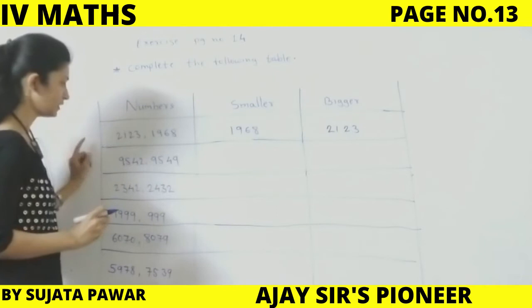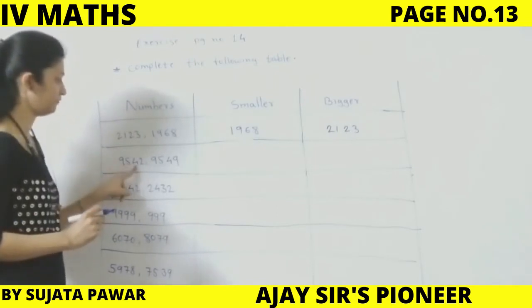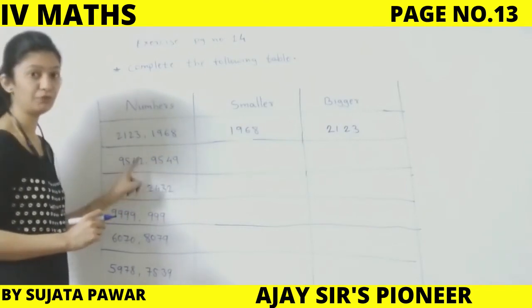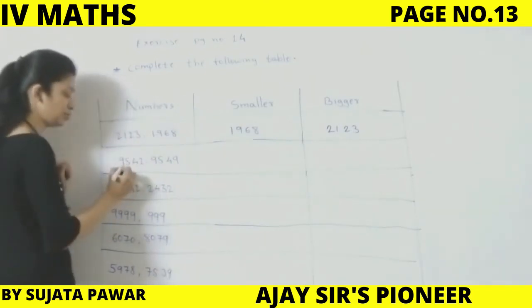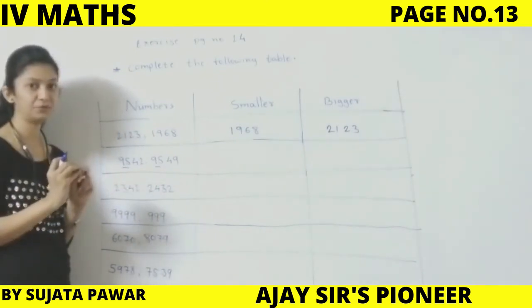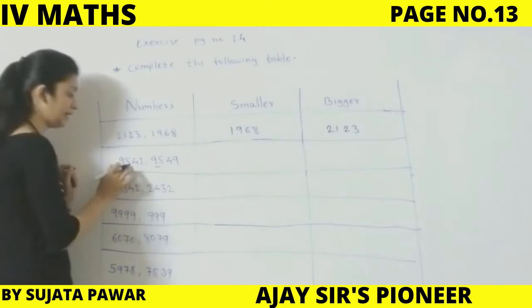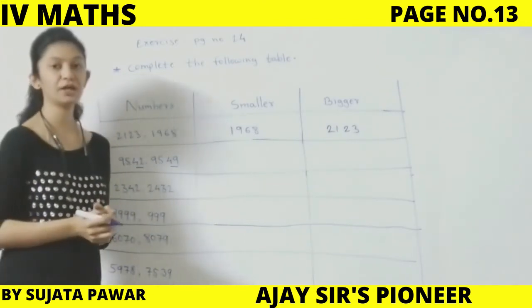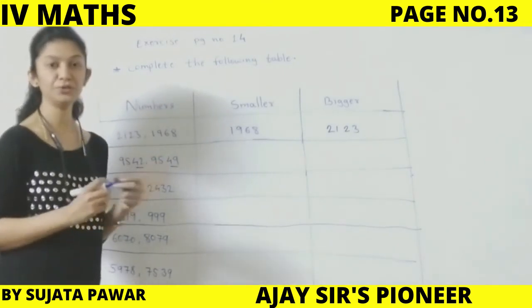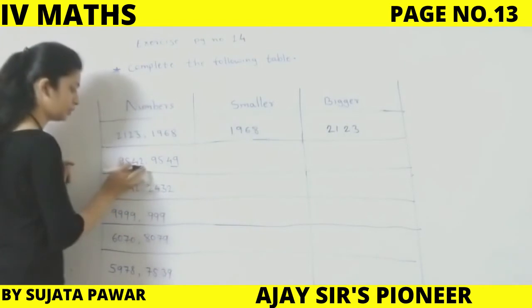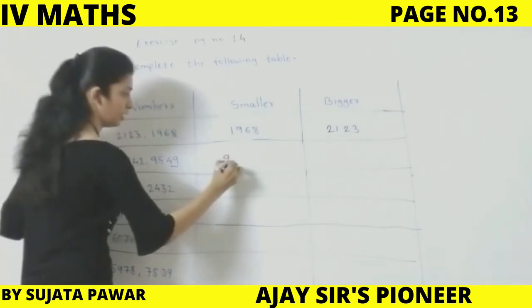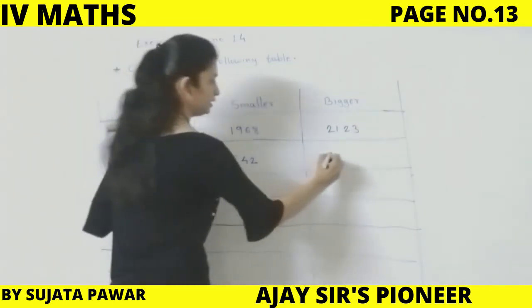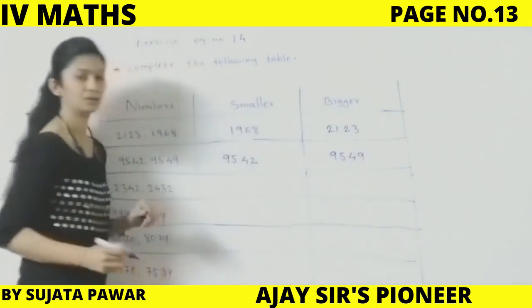Next: 9,542 and 9,549. The first two digits are the same — 95. So we look at the last two digits: 42 and 49. Which is the smaller number? Obviously 42 is smaller than 49. So 9,542 is smaller and 9,549 is bigger.